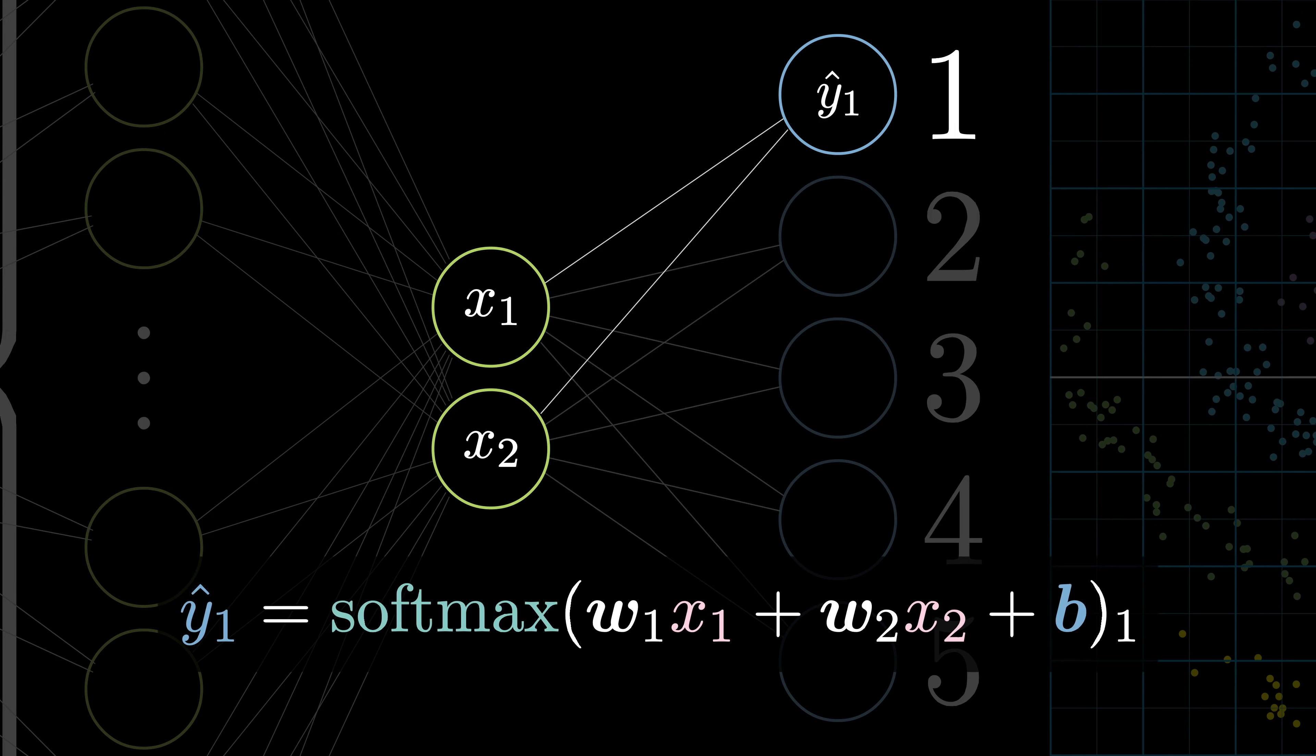If we consider the value of the first neuron, we can write it out using the equation w11x1 plus w12x2 plus b1, where w11 and w12 are the first and second elements of the first row of the weight matrix, and b1 is the first element of the bias vector. This is essentially an equation for a plane.